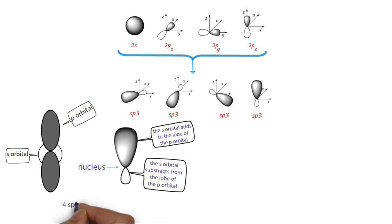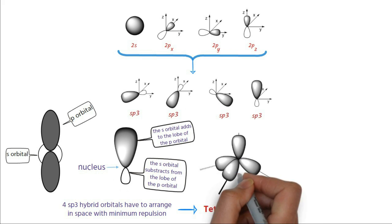Since like charges repel, therefore the 4 hybrid orbitals, each filled with an electron must arrange themselves in space so as to minimize this repulsion. These 4 hybrid orbitals can get as far away from each other as possible when they point towards the corners of a regular tetrahedron, a pyramid with 4 faces, each an equilateral triangle.